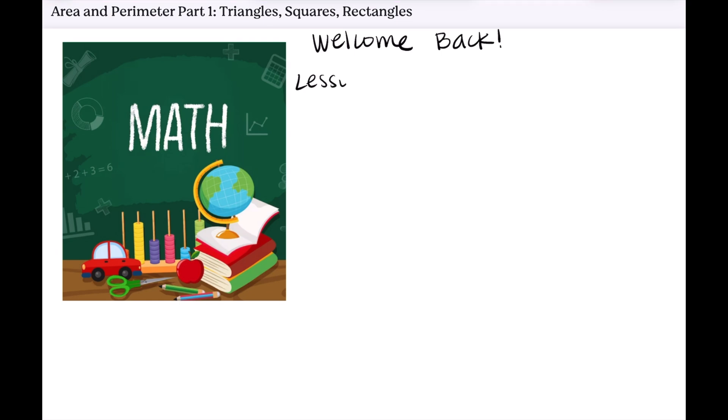In today's video we're going to continue working through the beginning geometry module. In this video we will go over the area and perimeter of three shapes. We will continue doing these types of videos for other shapes as well, but in this video for part one we'll do triangles, squares, and rectangles.